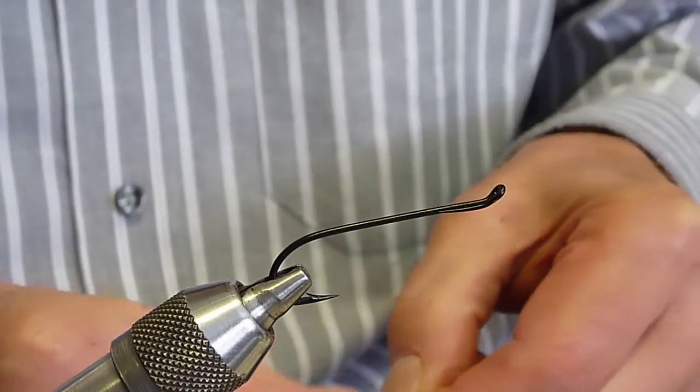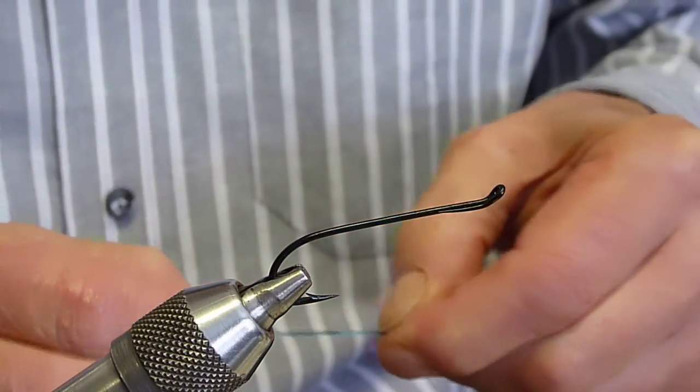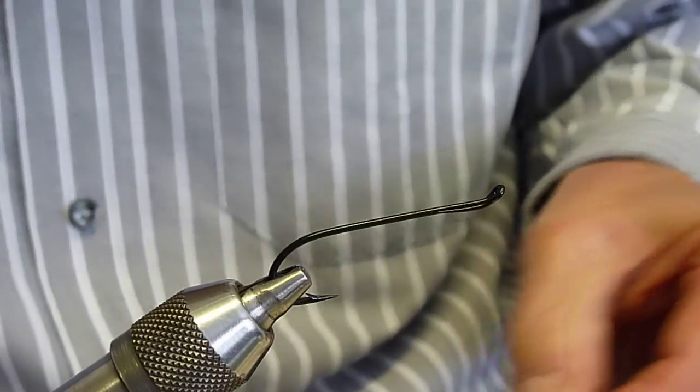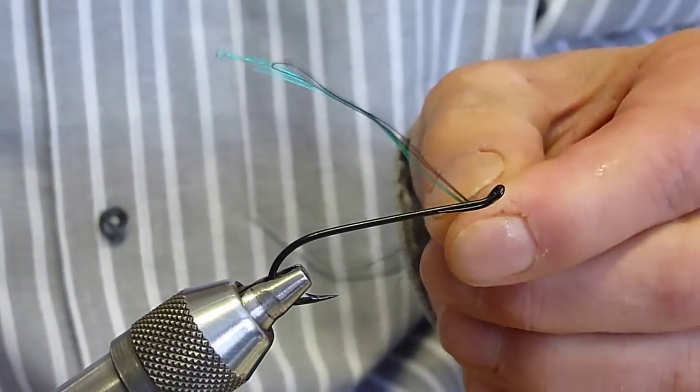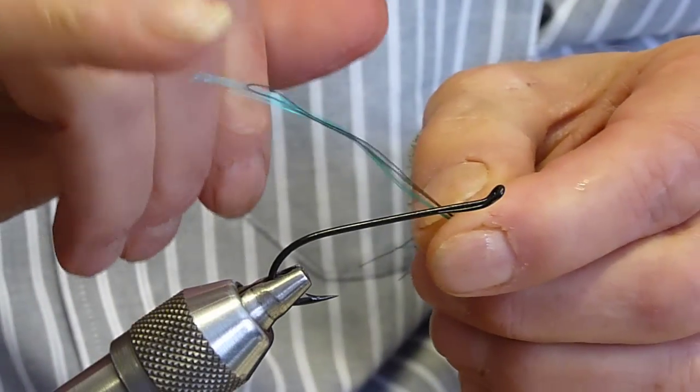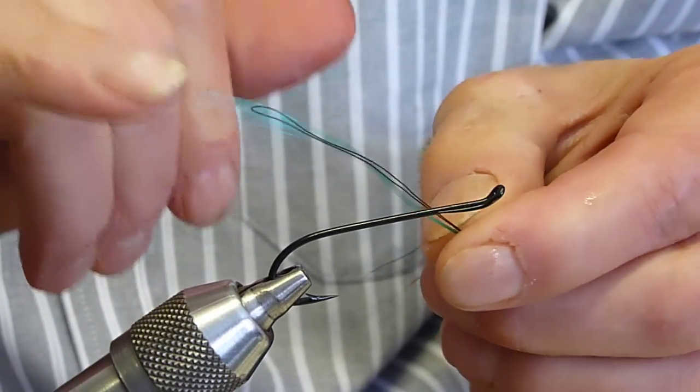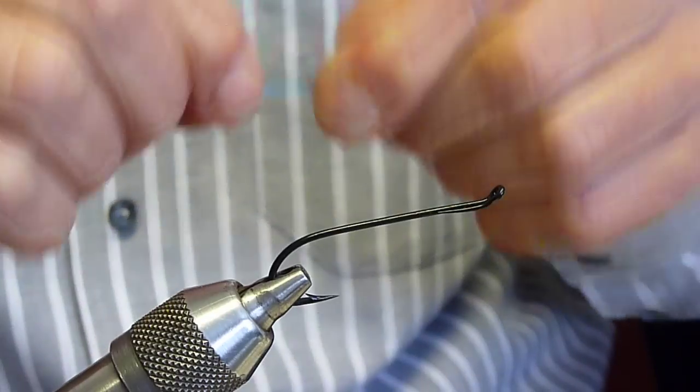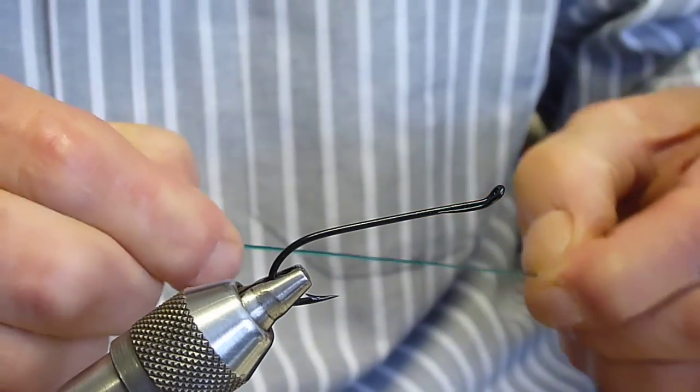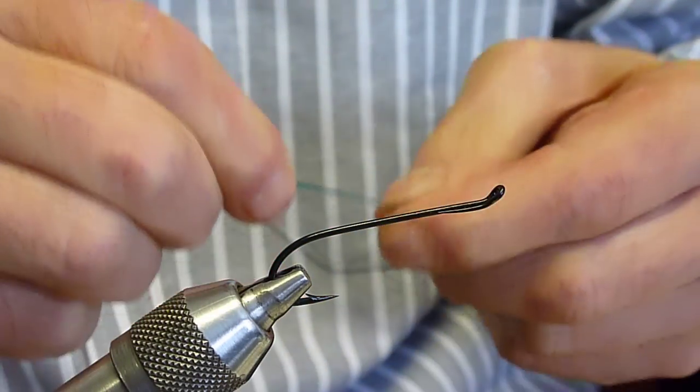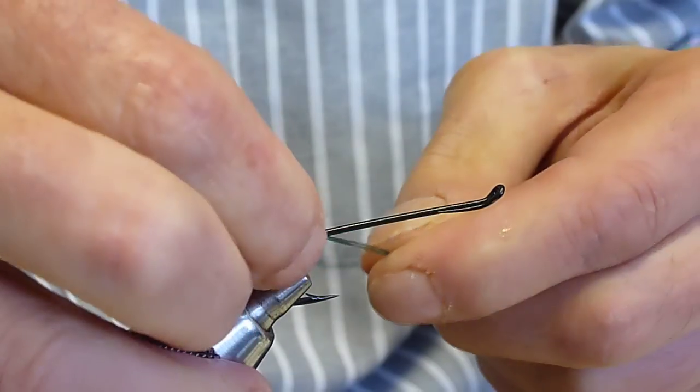These are steelhead patterns and they're very simple to tie. This is basically using the UTC wire. For this purpose I'm using three of the teal and two of the black. The objective of this one here is to get a good heavy fly that's going to go down and also give the tractor pattern on it as well.